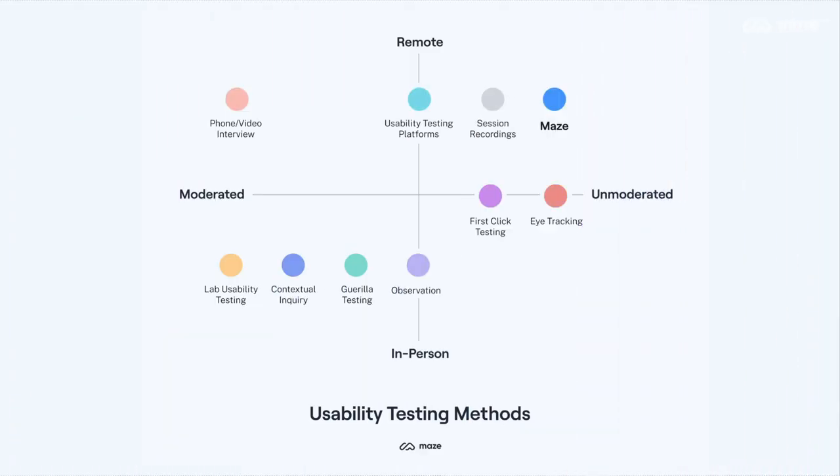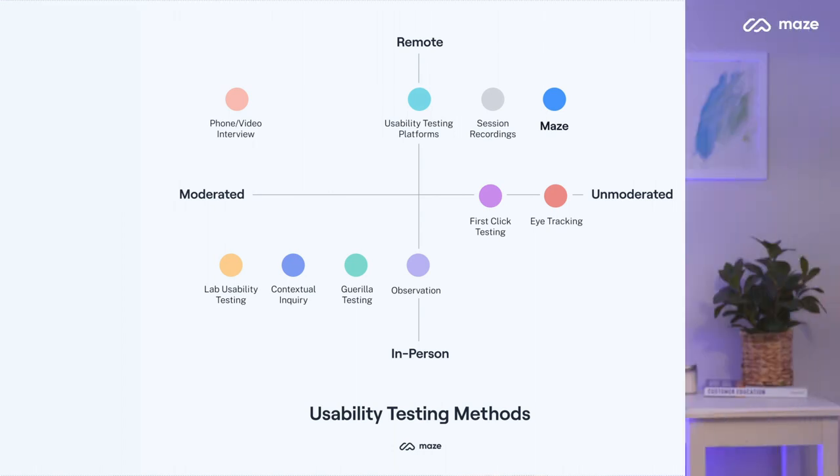Once you've decided on moderation, you can consider what method of usability test you want to use. Each method falls under the types above and can provide a different kind of data and insight into your product. Remote usability testing typically involves asking the test participants to complete a series of tasks using your product. But you may also want to consider other remote usability methods like phone and video interviews, session or screen recordings, first click testing, and eye tracking.